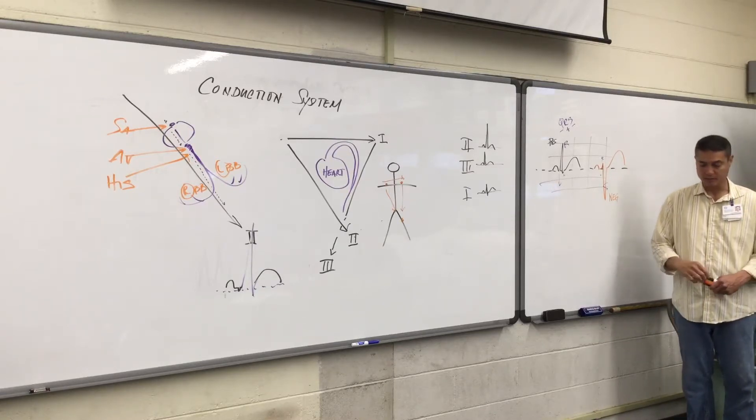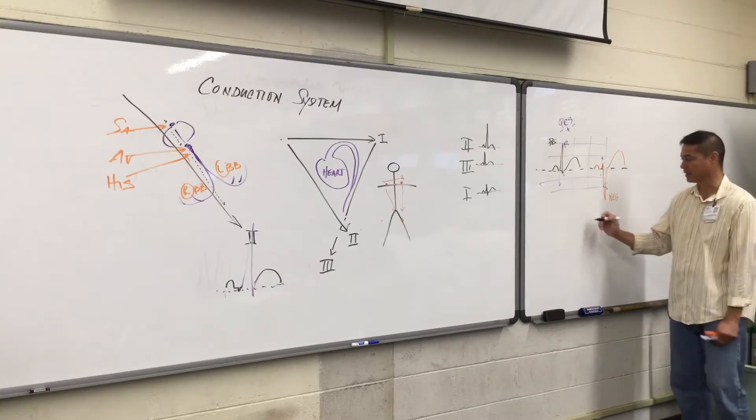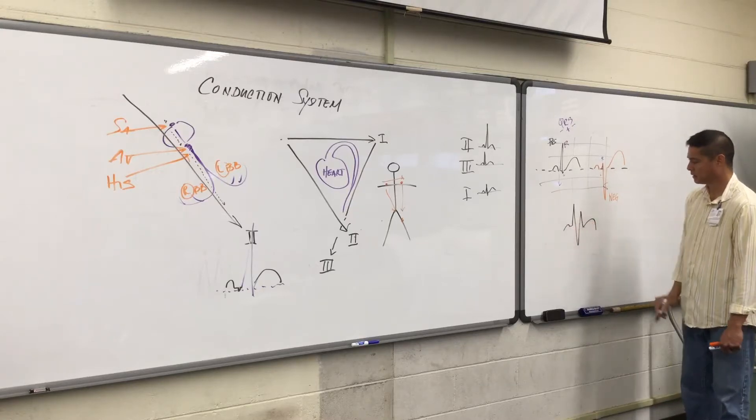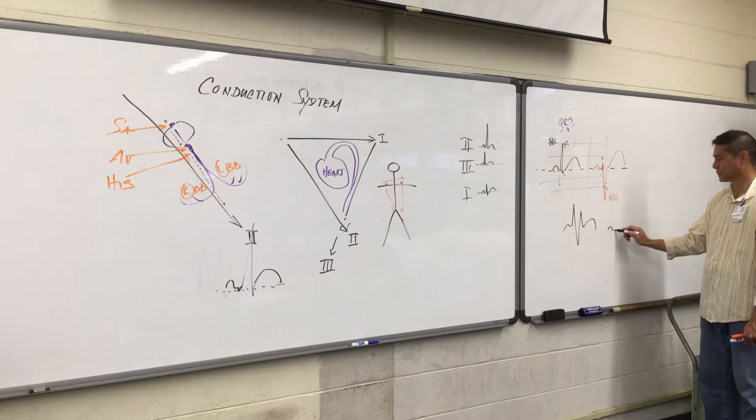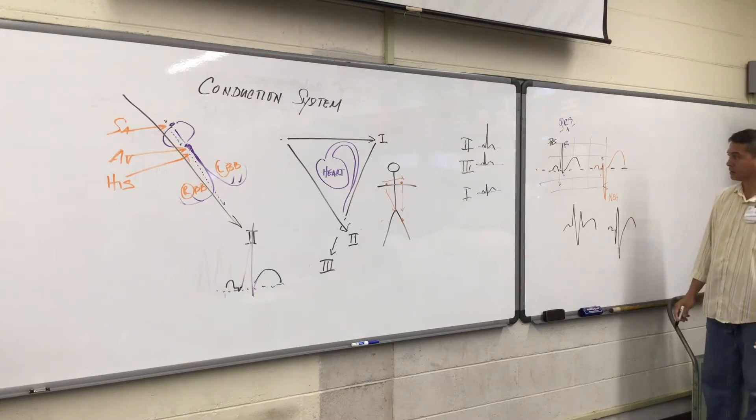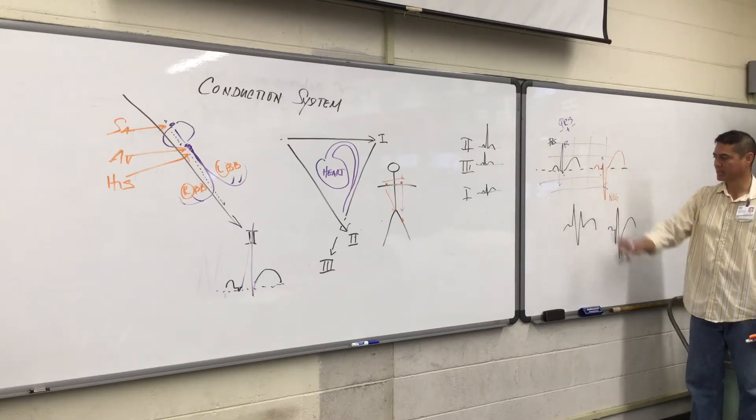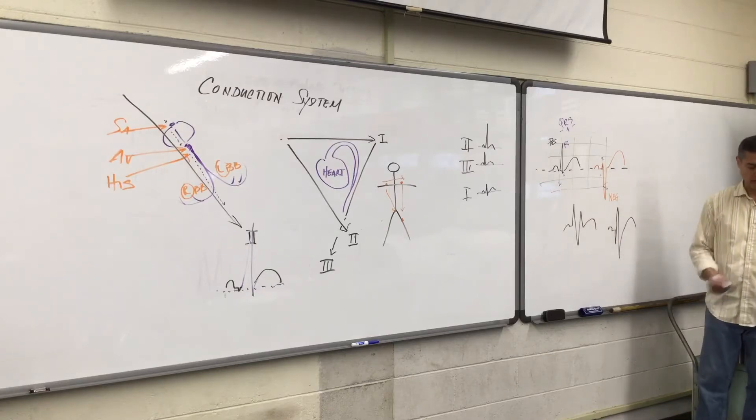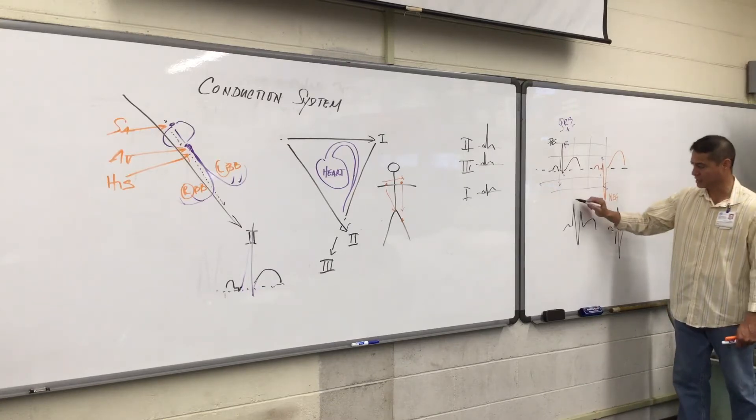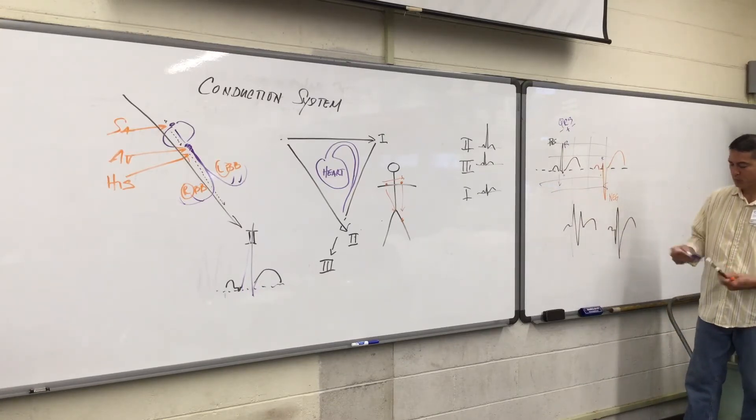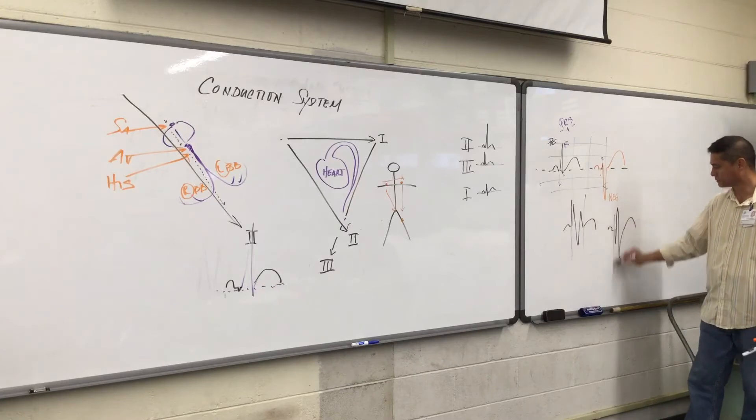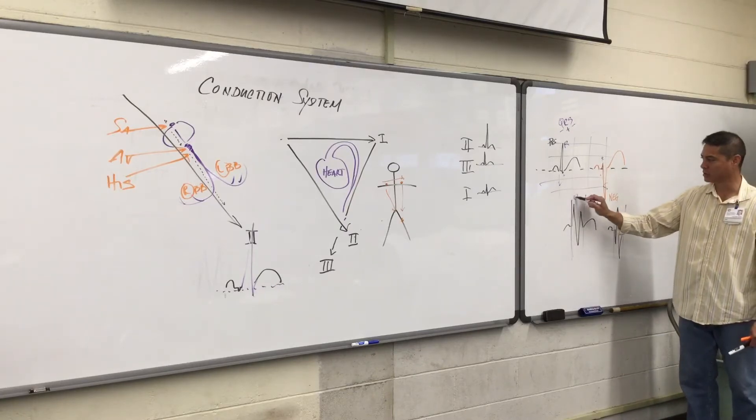Your EKG complex, the QRS, it can form many different patterns. It doesn't have to look just basically upright. It can have multiple deflections going up and below baseline. I just need you to know that when you see these sharp pointed complexes on your EKG, this whole thing is called a QRS complex.